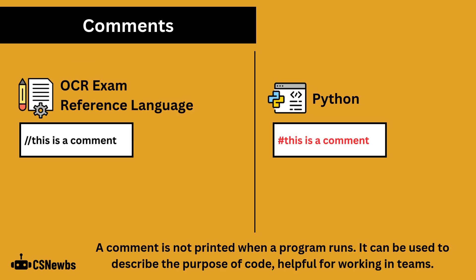A comment is not printed when a program runs. It can be used to describe the purpose of code and is helpful for working in teams. OCR ERL uses two forward slashes, whereas Python uses a hash.